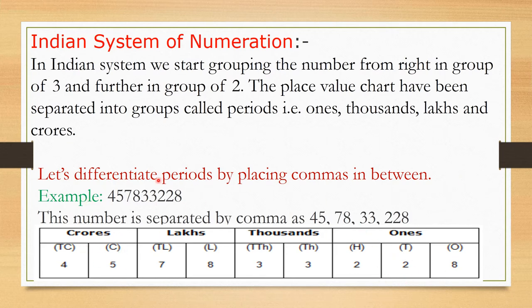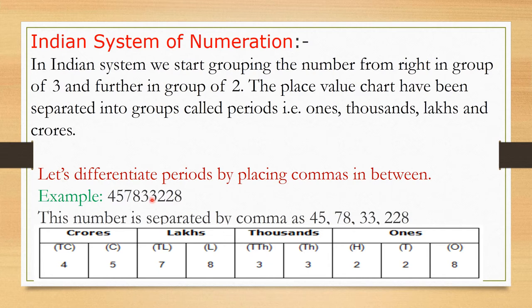We place all digits in their proper positions from right to left. First, 8 goes to the ones place, 2 to the tens place, and 2 to the hundreds place — completing the ones period of 3 digits. After the first period, place a comma. Then 3 goes to the thousands place and 3 goes to the ten-thousands place, completing the thousands period.